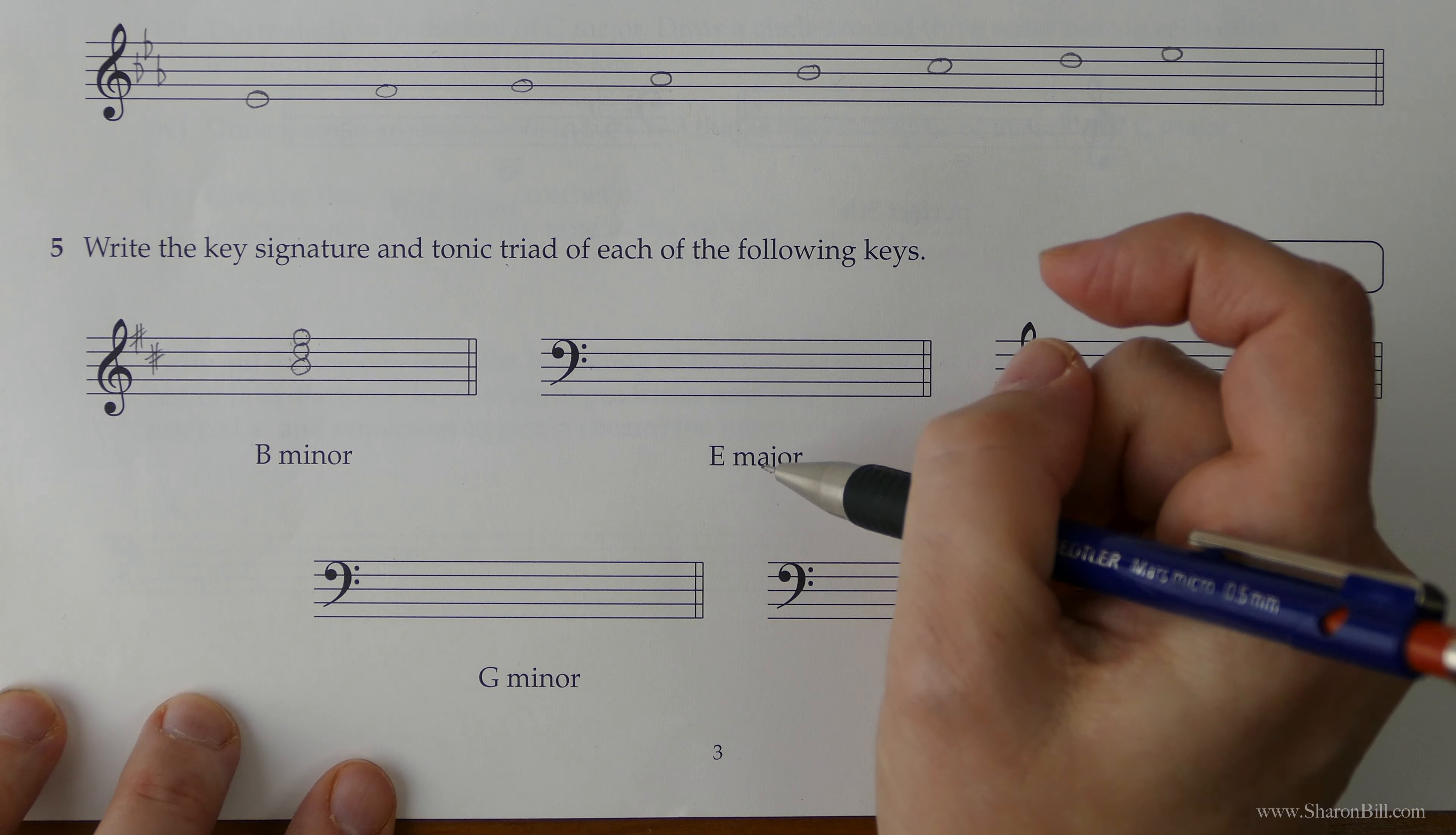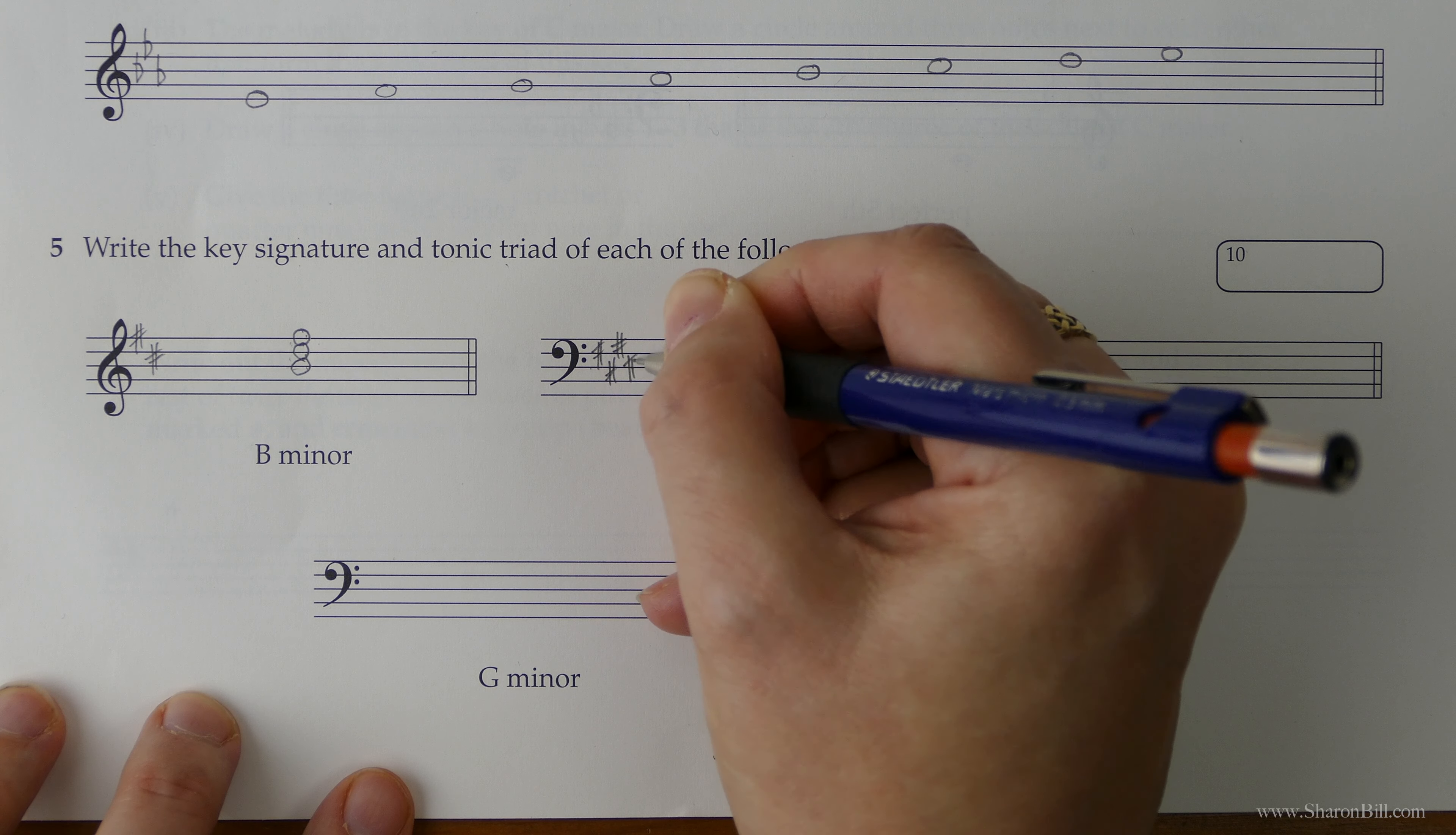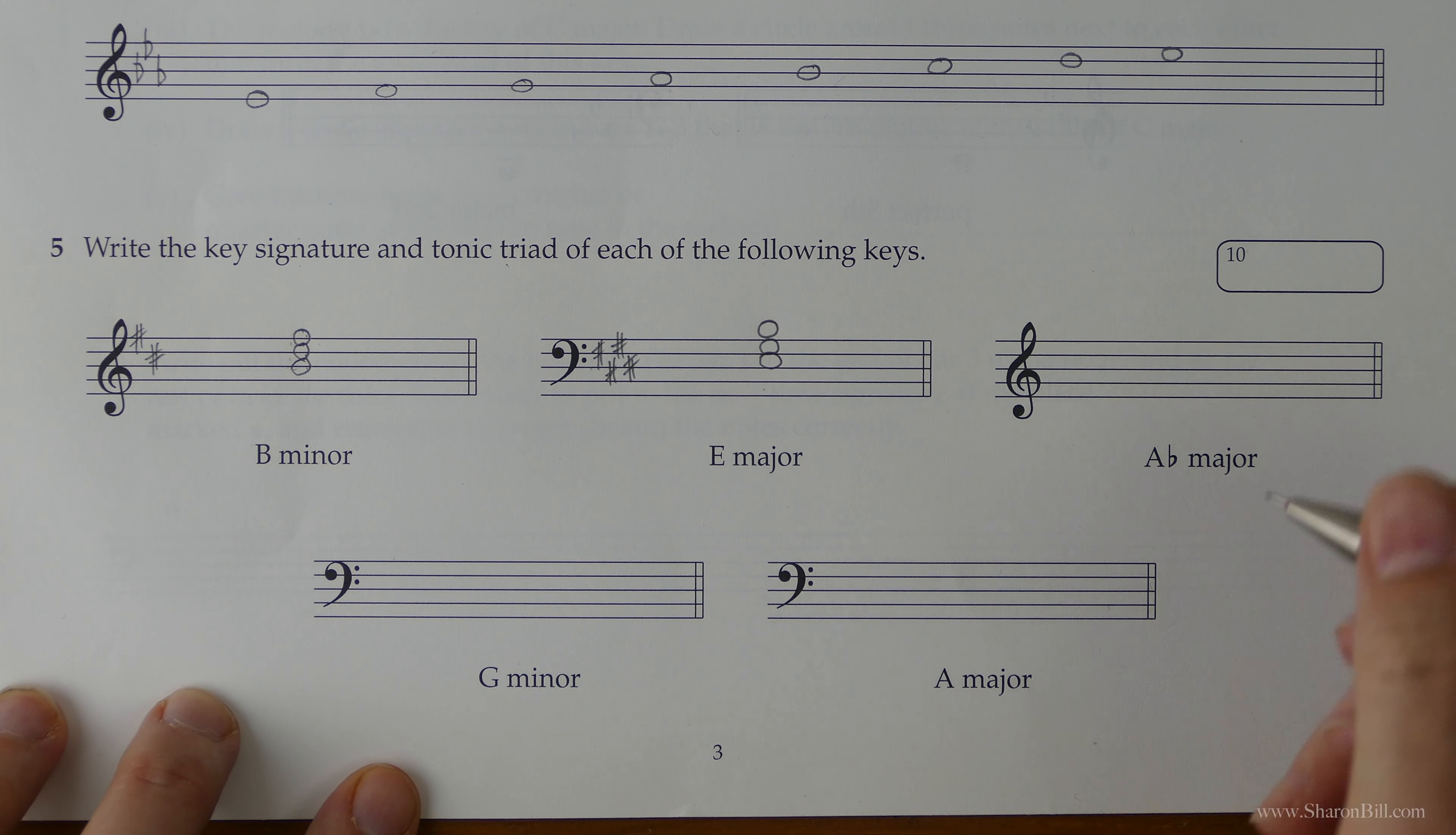So let's move on. E major, we're in the bass clef now. E major has a key signature of 4 sharps. So we want F, C, G, D. And then we need to find note E in the bass clef. F, all cows eat, first, third, fifth. There's our tonic triad.